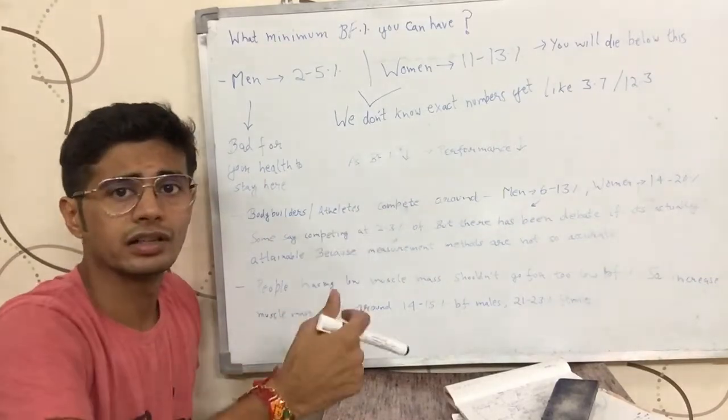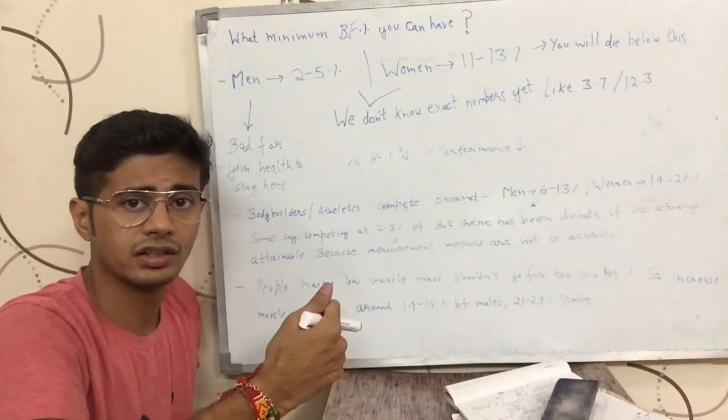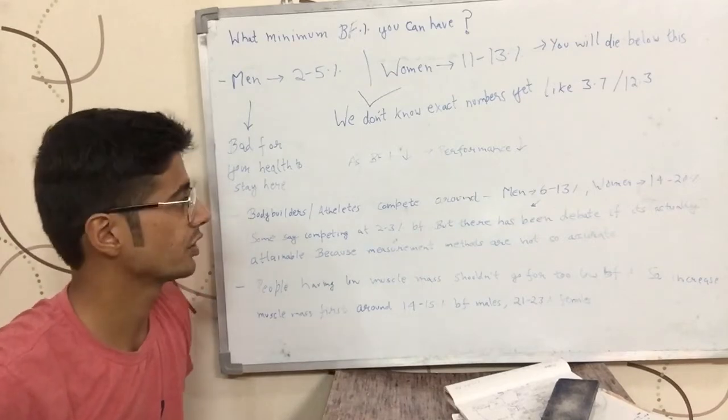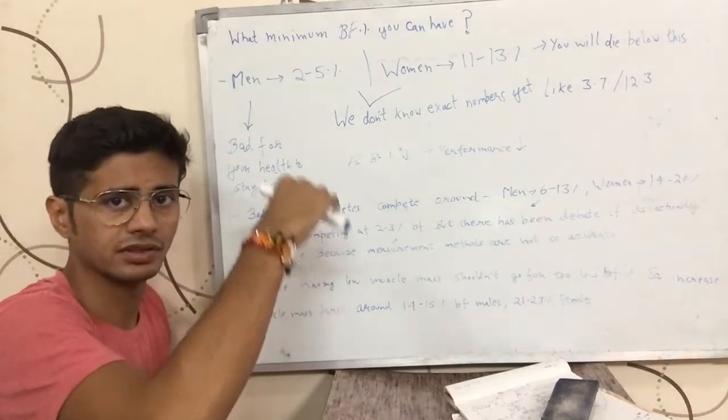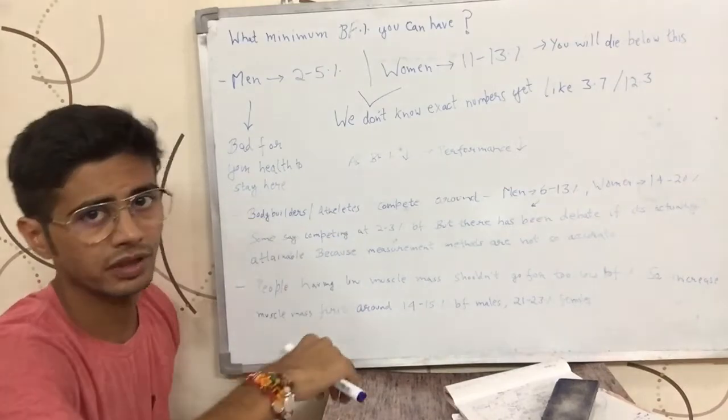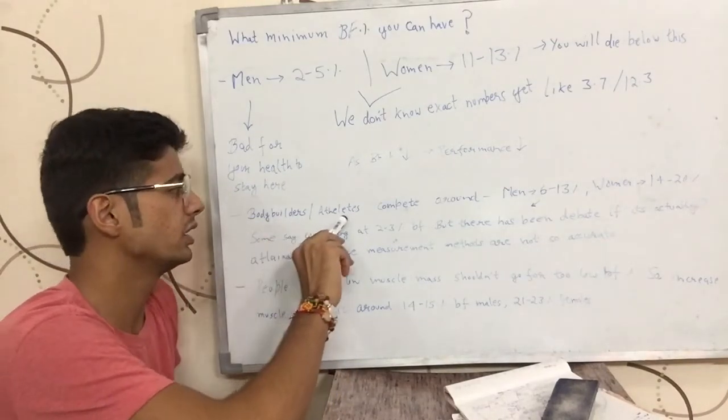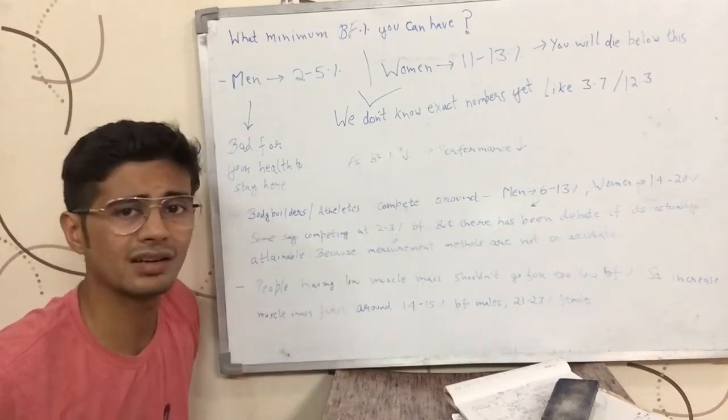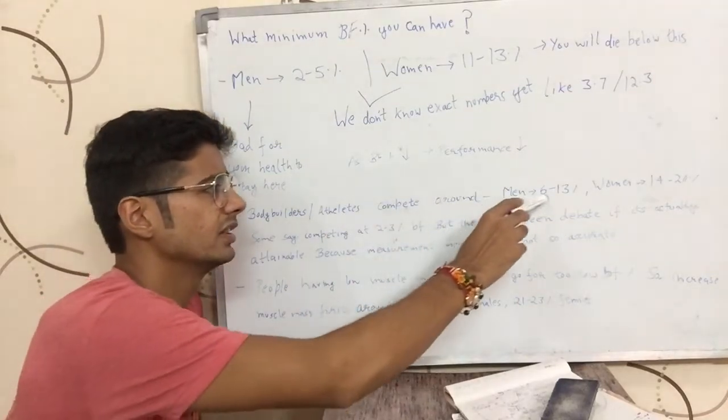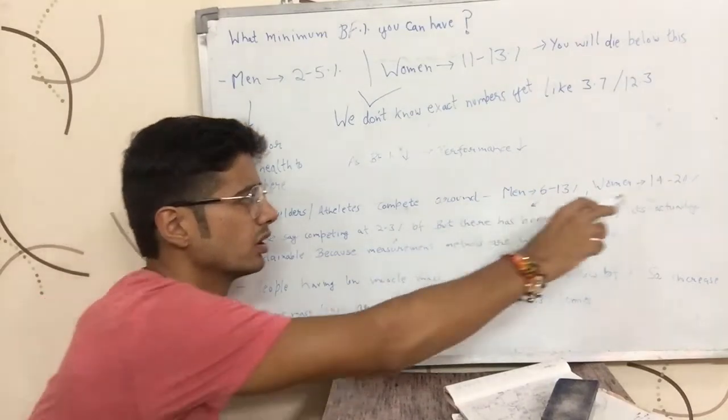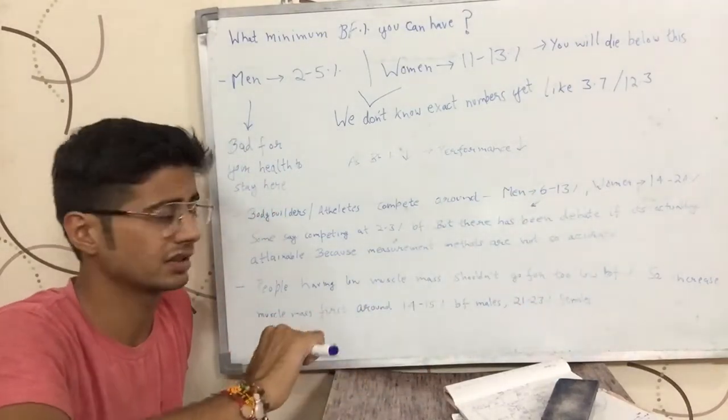Now, if you're a bodybuilder, you might not lift as much weight on 6% body fat as you were able to lift on 12%. And it happens a lot of times. As your body fat percentage goes down, your performance can decrease. Bodybuilders or athletes compete around - for men, they compete around 6 to 13% body fat and women would compete around 14 to 20% body fat.